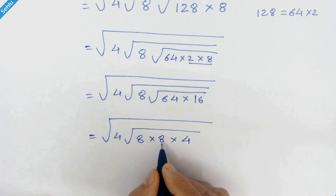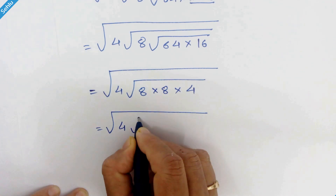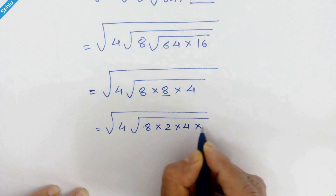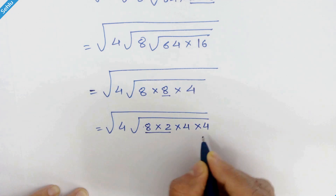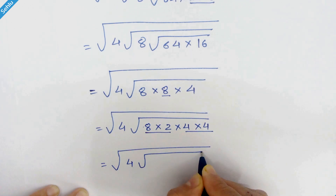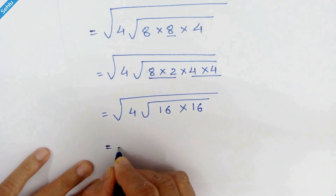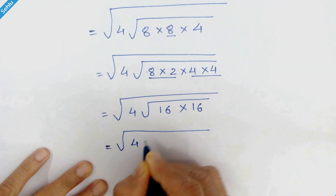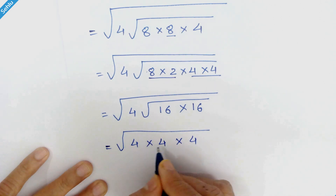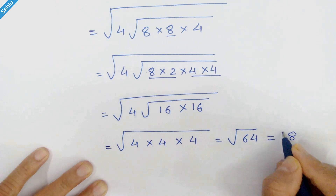Here we have square root of 8 times 8 times 8 times 4, which is equal to square root of 4. Now this 8 can be written as 2 times 4, giving us 4 times 4 times 4 times 4 times 4 times 4. Here 8 times 2 is 16 and 4 times 4 is 16, so we have square root of 4 times 4 times 4 times 4 times 4 times 4 times 4, which equals square root of 64, and square root of 64 is 8. That's the answer.